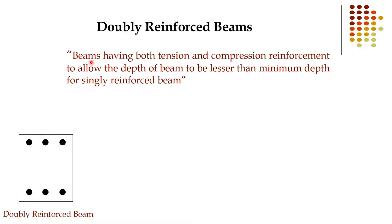Doubly reinforced beams allow the depth of the beam to be lesser than the minimum depth for singly reinforced beams. This ability to use a smaller depth compared to singly reinforced beams is the main benefit of the doubly reinforced beam.